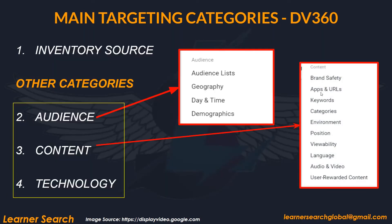Another targeting category is Content. In the Content category, there are many targeting options available. In this slide, you can see various targeting options available under Content: Brand Safety, Apps and URLs, Keywords, Categories, Environment, Position, Viewability, Language, Audio and Video, and User-rewarded Content.